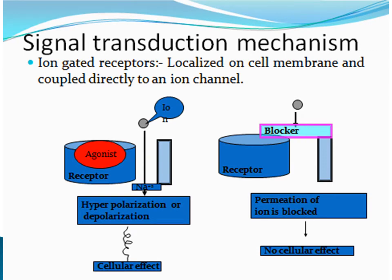Ligand-gated ion channels are localized in the cell membrane and are coupled directly to an ion channel. Their location is transmembrane, meaning they have an extracellular and an intracellular part. On their extracellular part there is a ligand binding domain where the ligand binds.